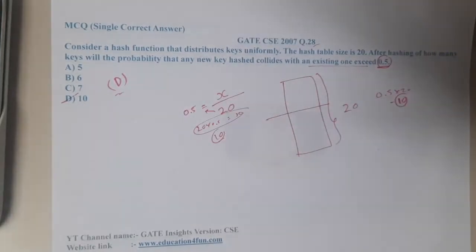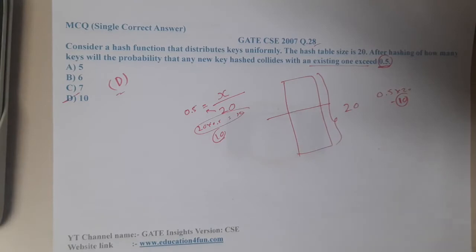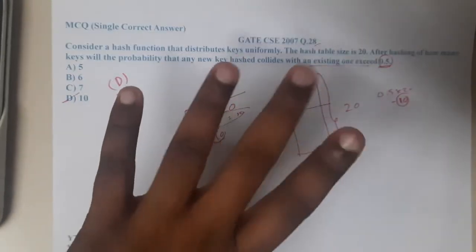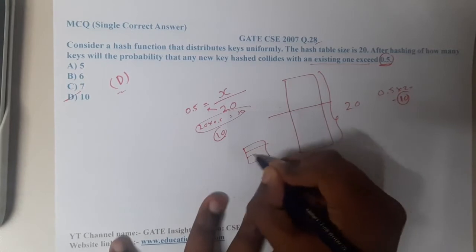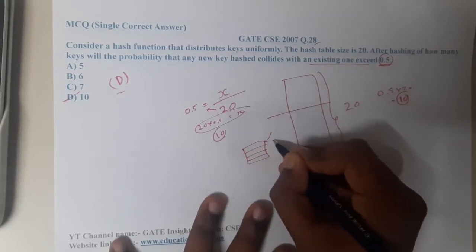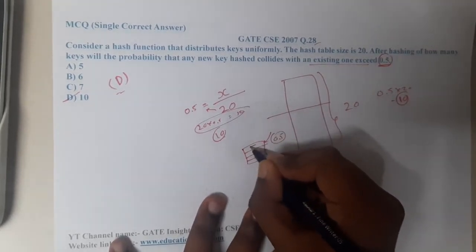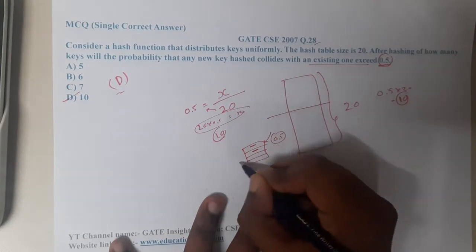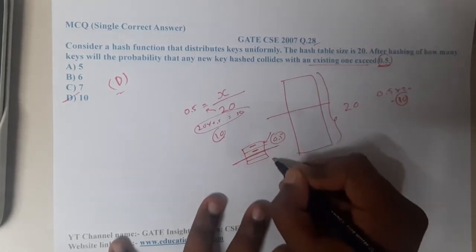So from that you can directly solve. Even if you want to test it, let us take a table size of 4. After how many insertions will the table have 0.5 probability? After you insert two elements, the probability will be half, right? So 0.5.